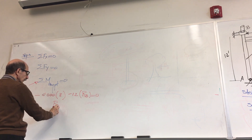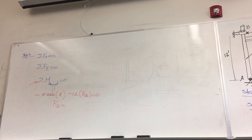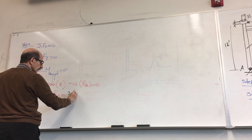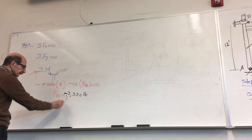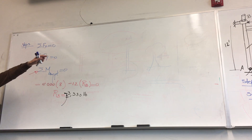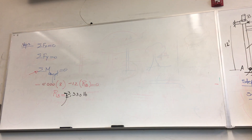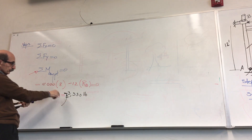Solving for RB, the reaction at B comes out to be 3,330 pounds, but it comes out negative. As soon as you see a negative sign, that means the assumed direction is wrong — so you erase and put the correct direction. The result is then positive, so that is the answer.